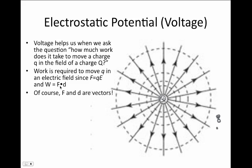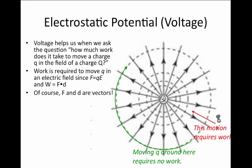It matters whether we're moving the object little q along the direction of force, against the direction of force, or perpendicular to the direction of force. For example, this motion shown here — moving directly up against the field lines — requires work. Whereas this motion, moving around in a circle like so, requires no work. In this case, d at every little increment is always perpendicular to the electric field and therefore perpendicular to the force F.